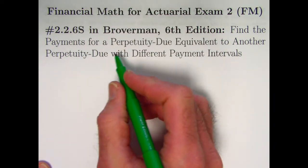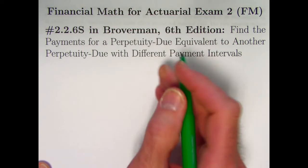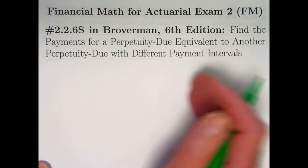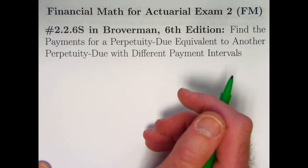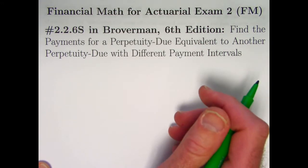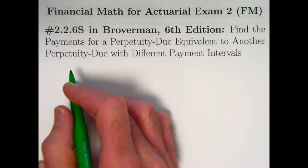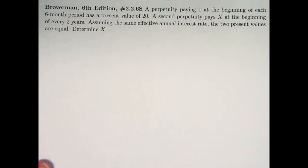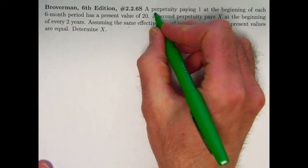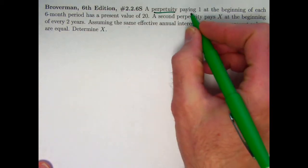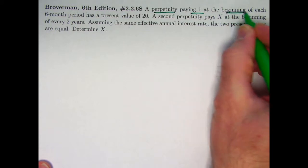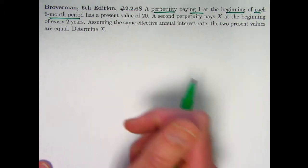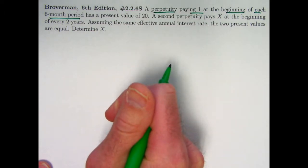We're going to be finding payments for a perpetuity due. Perpetuity is an annuity that goes on perpetually forever. Due means we're going to evaluate the present value right before the first payment. We're going to relate it to another perpetuity due that's got a different payment interval. First of all, we got the first perpetuity paying 1 at the beginning of each six-month period.